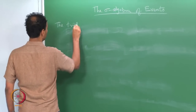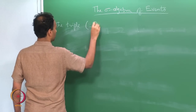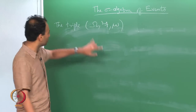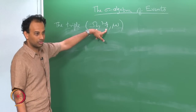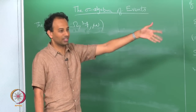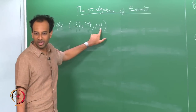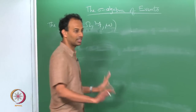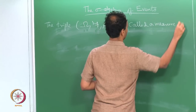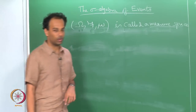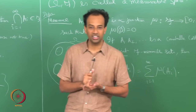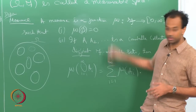The triple (omega, F, mu) is called a measure space. You started with omega, endowed it with a sigma algebra F to get a measurable space, and now that you have put a measure on this space, it is called a measure space. A measure space consists of a set, a sigma algebra of subsets, and a measure defined on the F-measurable sets satisfying those two properties.